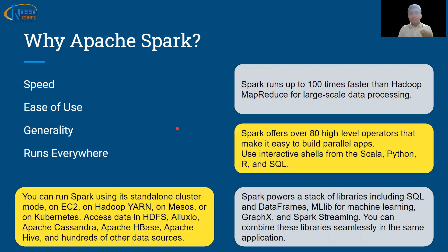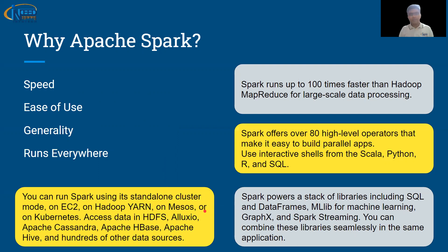Generality: Spark has Spark SQL and DataFrames for processing structured data, MLlib for machine learning, a graphics library for processing graph-structured data, and a streaming library for handling real-time data coming in at runtime. The good thing is you can use all these functionalities within the same application and leverage them together.